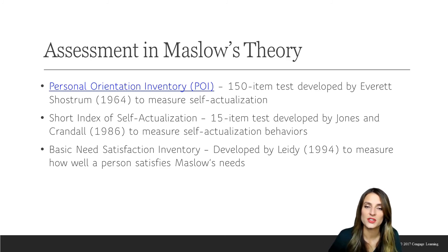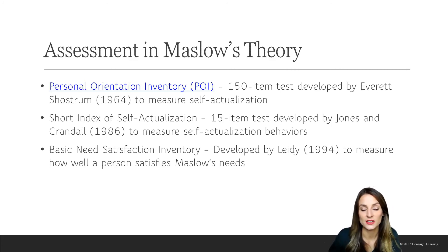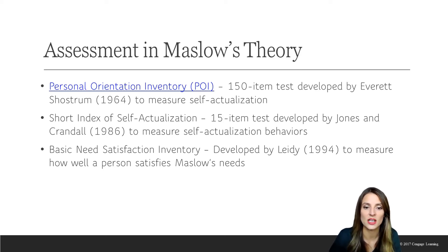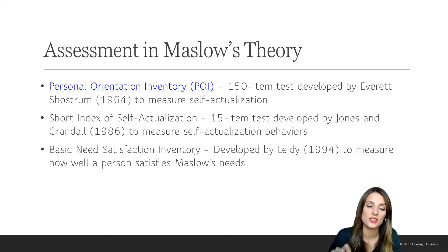Like the other theorists, Maslow did not create his own personality test, but several were developed years later. In 1964, the Personal Orientation Inventory was created — a 150-item personality test designed to measure the degree to which someone is self-actualized. The Short Index of Self-Actualization is a shorter version, created in 1986. And in 1994, the Basic Need Satisfaction Inventory was developed to assess how well we satisfy the other needs.